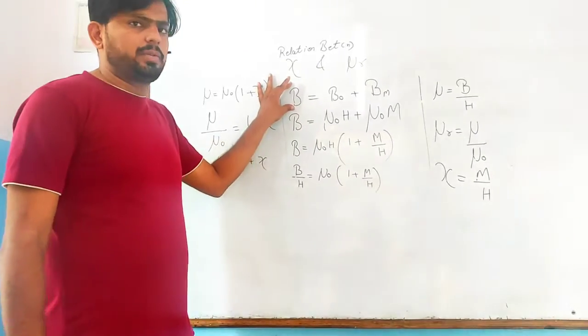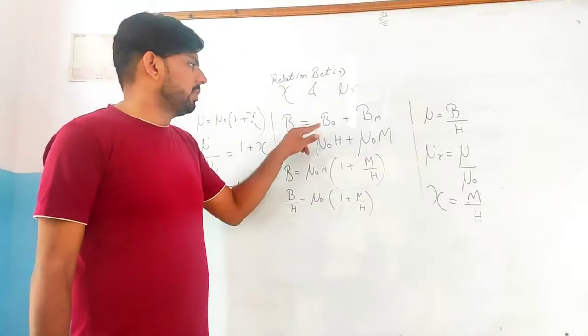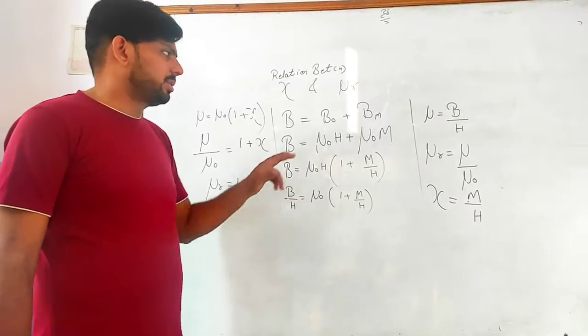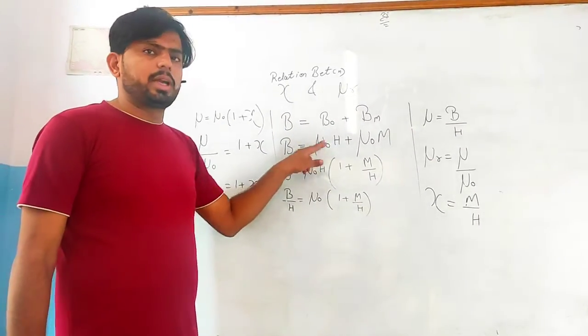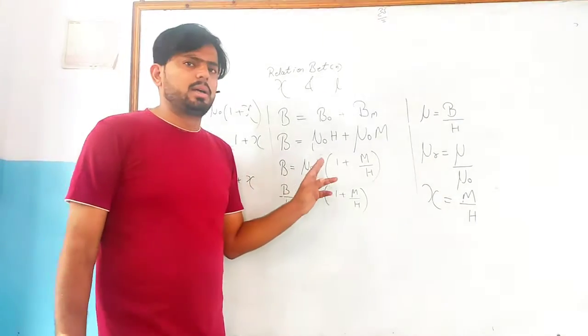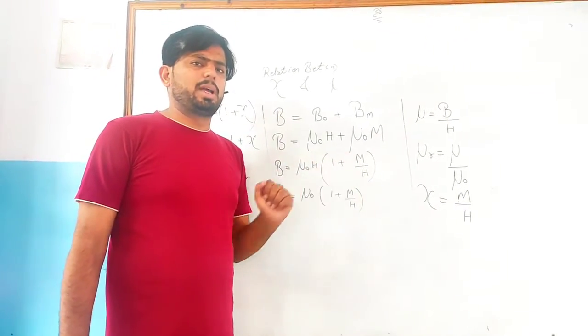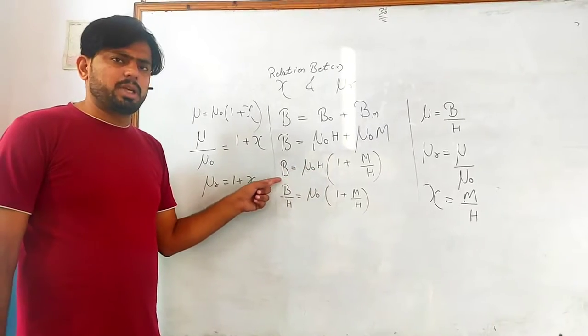What did we write for B's formula? B not plus BM. In place of B not what did we put? Mu not H. Taking mu not H common, we get 1 plus M upon H. M upon H - what is this? Susceptibility.